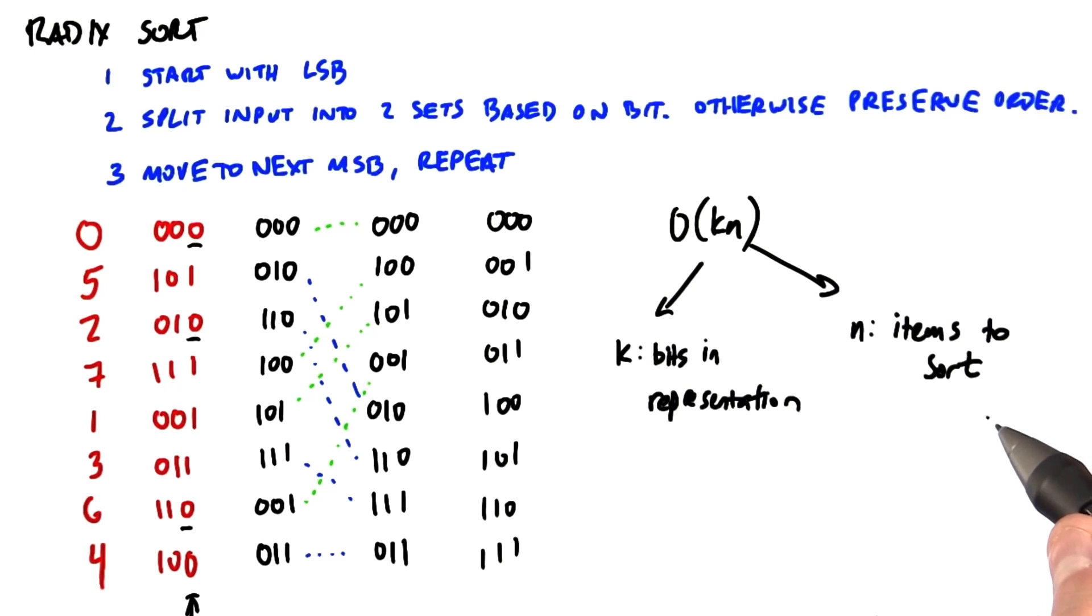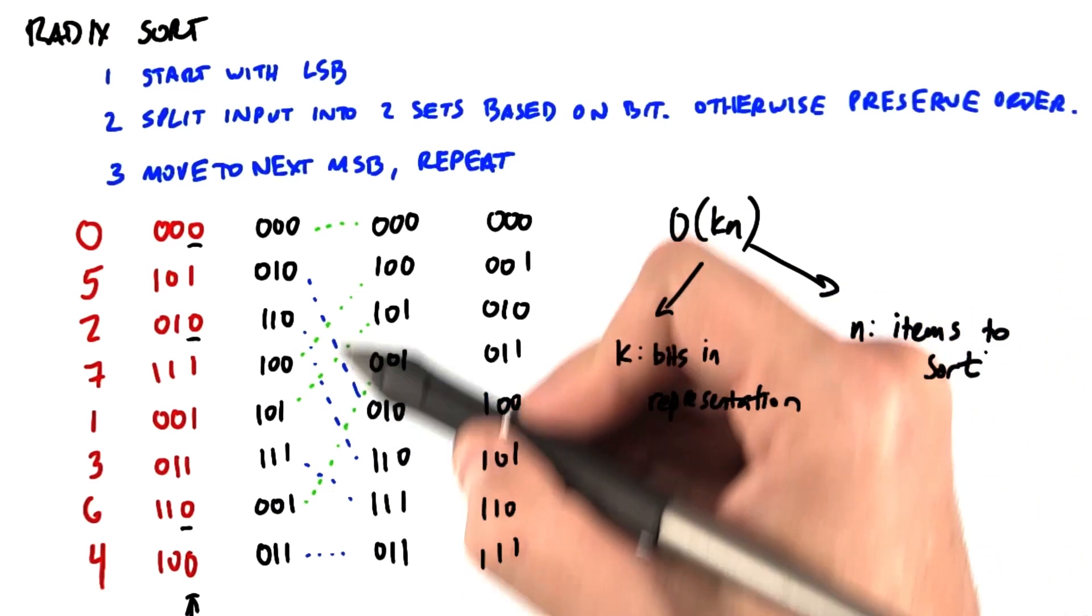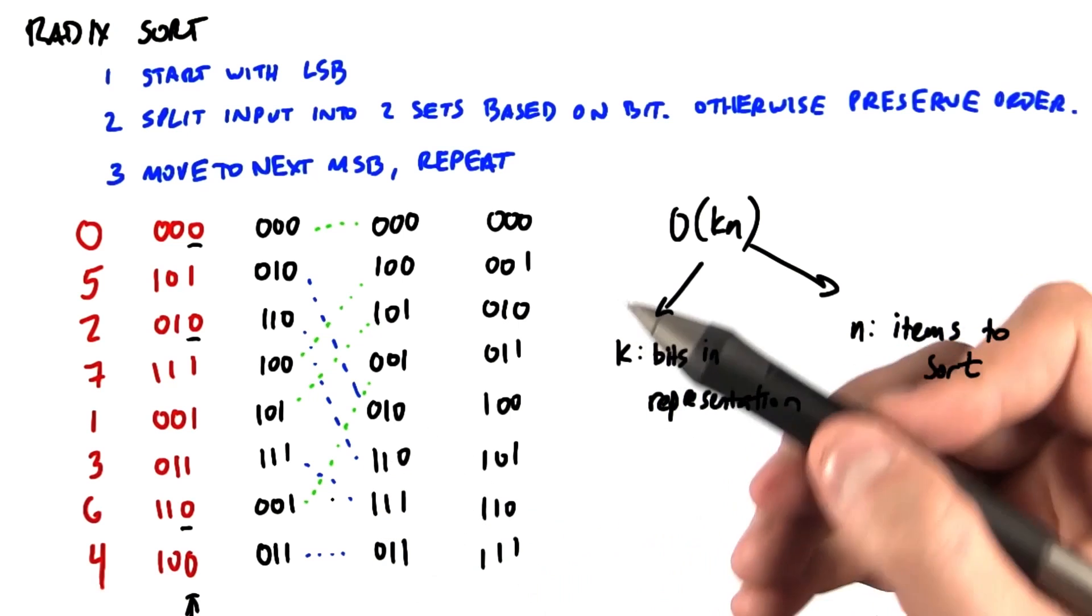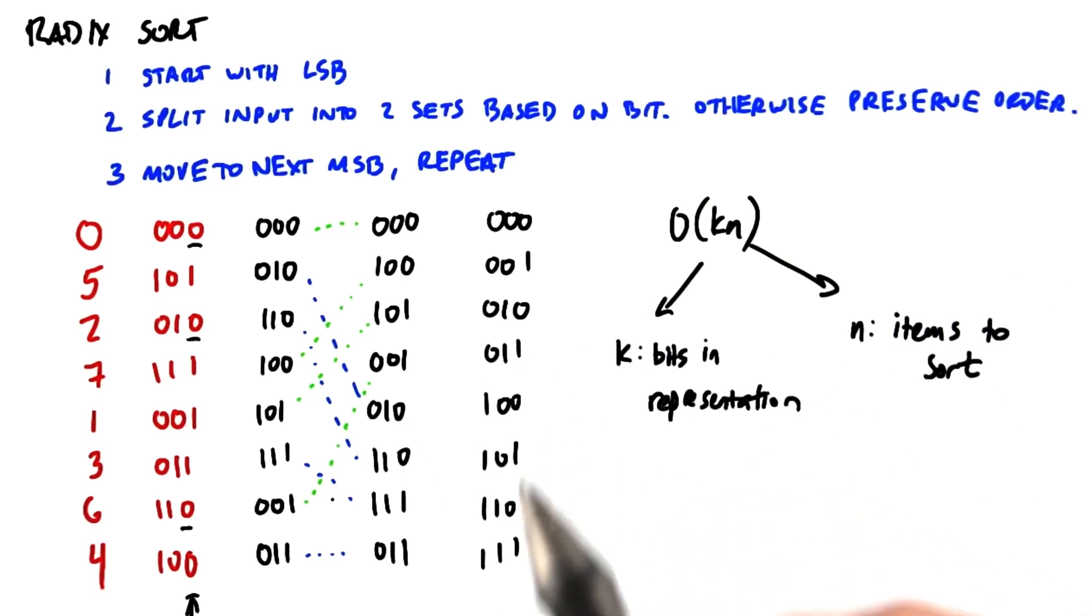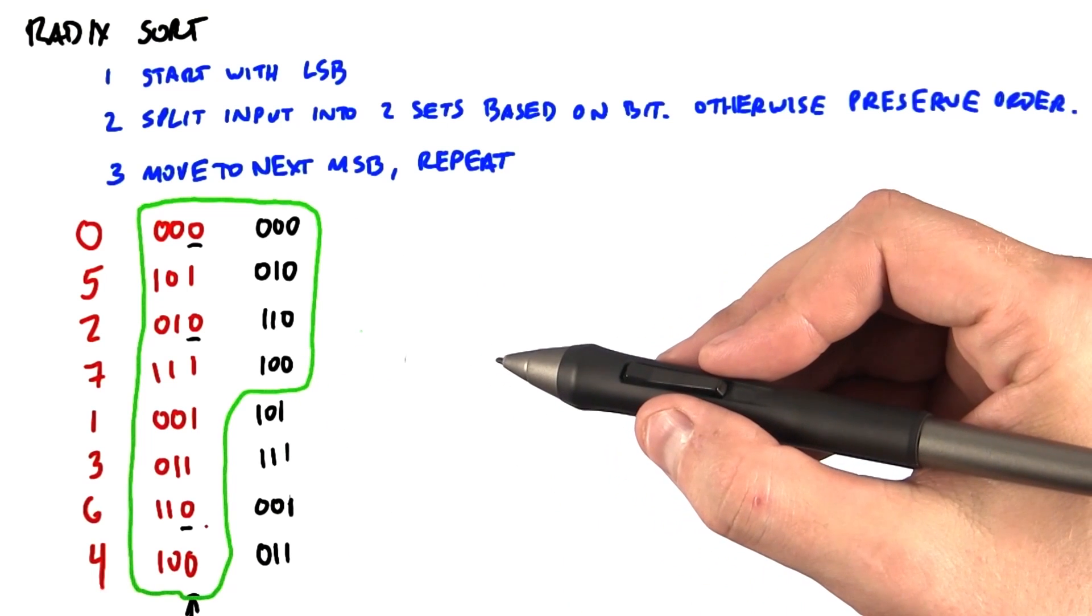and so that's one reason why this looks so good. The second is that the underlying operations that we need to do this split of the input at each step are ones that are actually very efficient. And in fact, they're efficient operations that you already know.